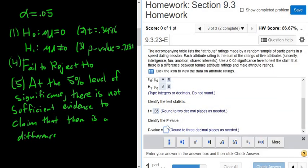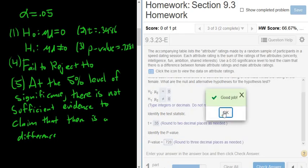Giant p-value, 0.728. It wants three decimals. Good job.